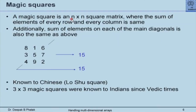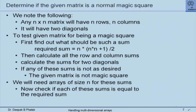A magic square is an n×n square matrix. As a demonstration: the matrix 8,1,6,3,5,7,4,9,2 shows every row, column, and diagonal adding up to 15. These are known as Lo Shu square to the Chinese, and 3×3 magic squares were known to Indians since Vedic times. The problem we pose to students is: given a square matrix, is it a magic square or not?